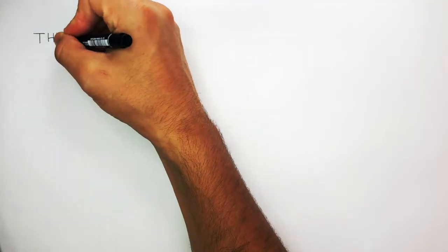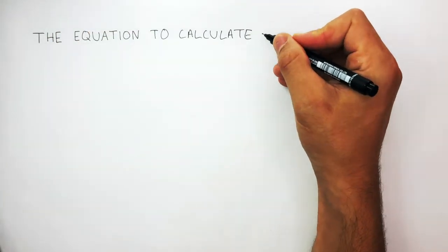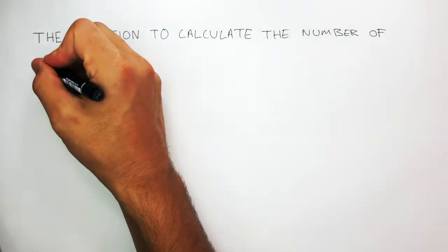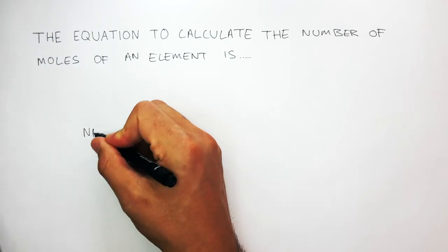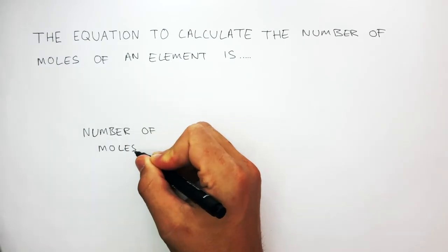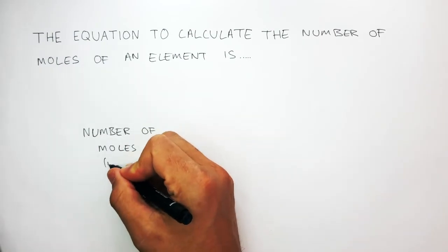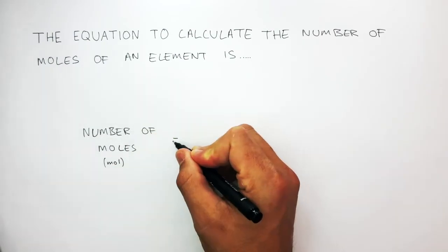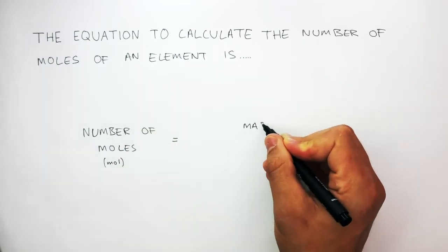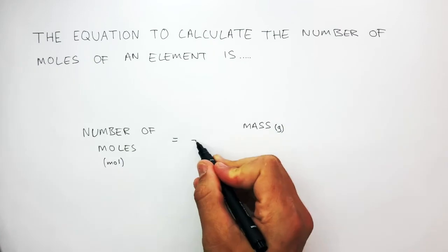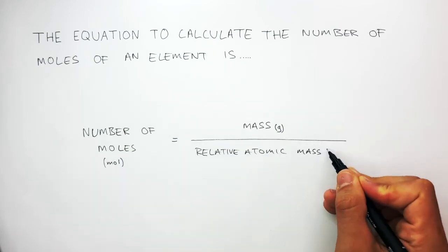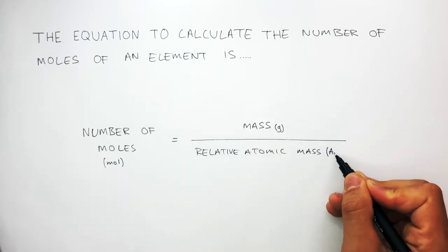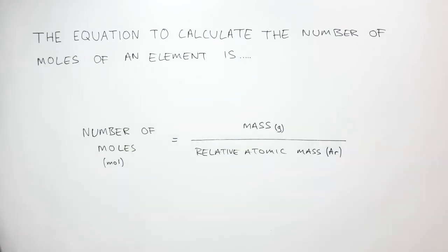The equation to calculate the number of moles of an element is: number of moles (unit: mole) equals mass in grams divided by the relative atomic mass, written as AR for short.